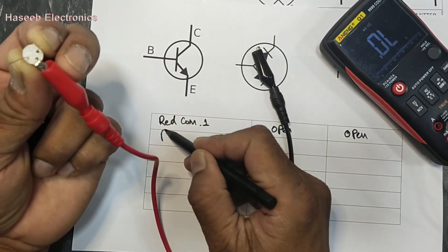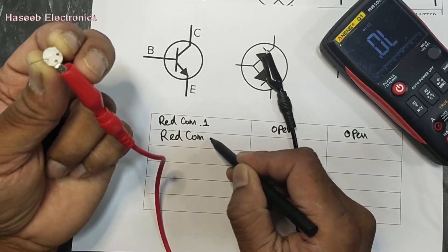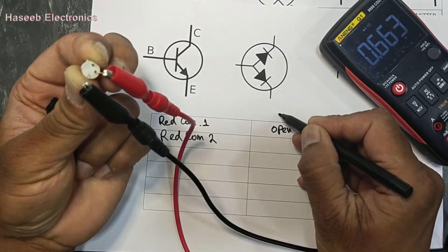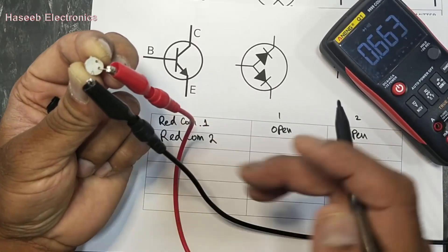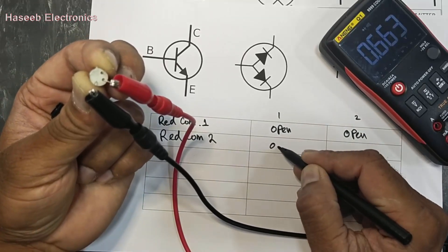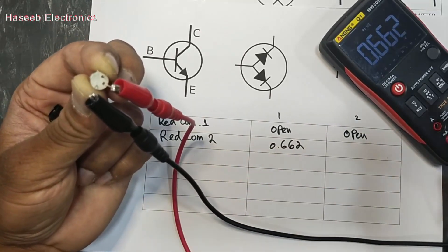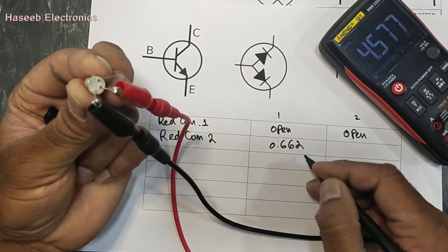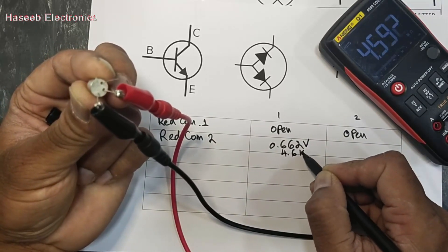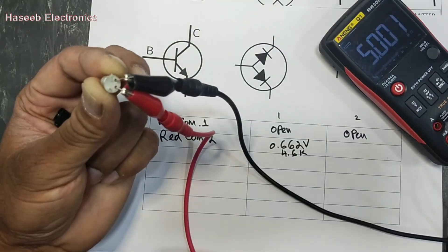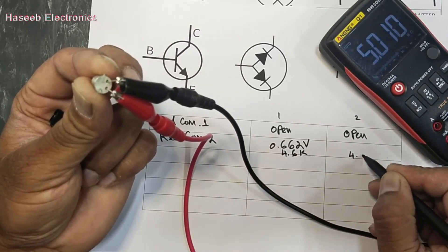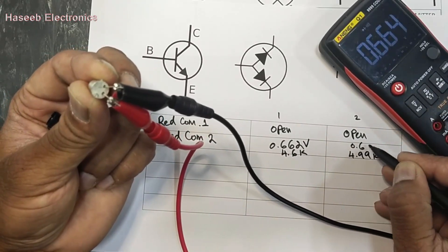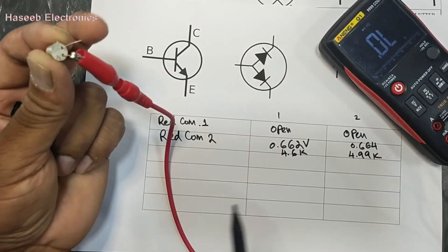Now swap the common lead to the center terminal, pin number two. Red as common at pin number two, connect black lead to pin one: we get 0.662 volts. Checking resistance it is 4.63 kΩ. Then checking pin three: it reads 4.99 kΩ, or in diode mode 0.664 volts. So we have two readings with red common at pin two.